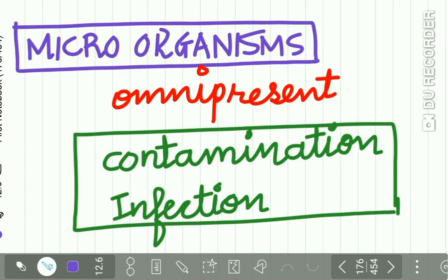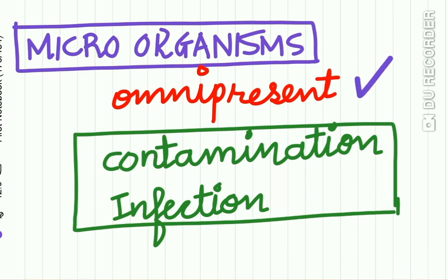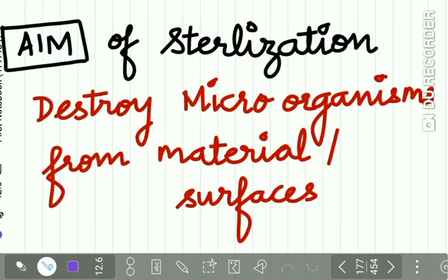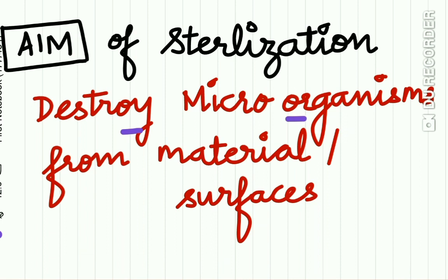The microorganisms responsible for infection are present at all places — they are omnipresent. These microorganisms cause contamination and infection. So the aim of sterilization is to destroy these microorganisms from materials or surfaces so as to reduce infection and contamination.